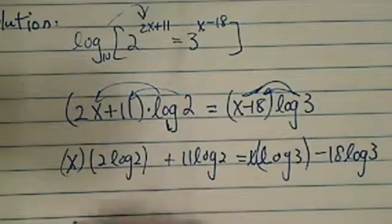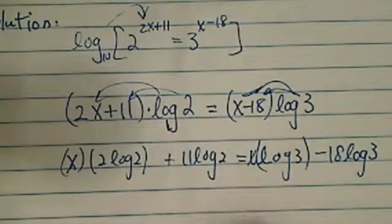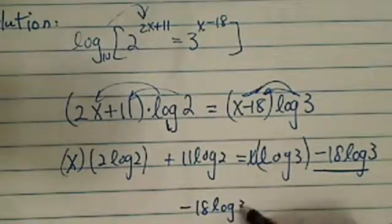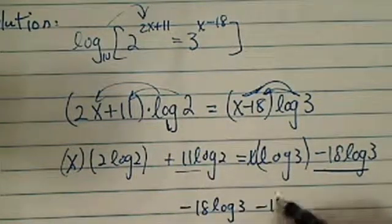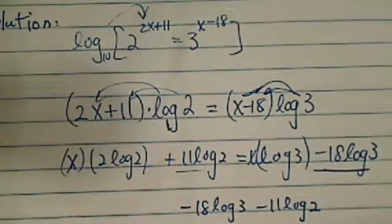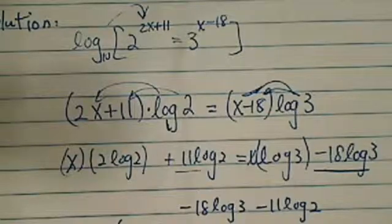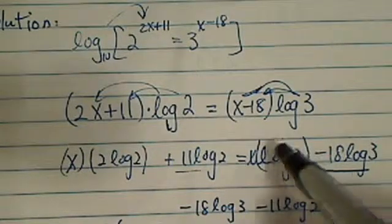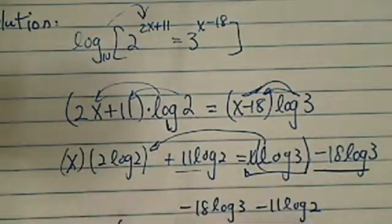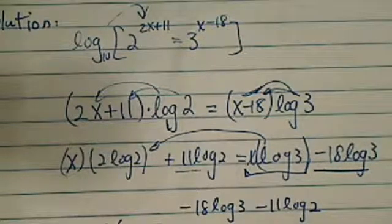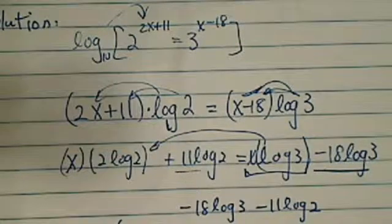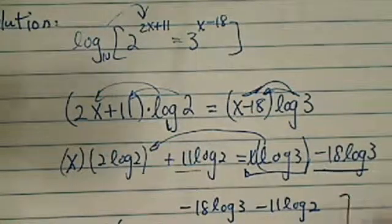Let's gather all the x over here and constant on that side. So constant on this side, I have this minus 18 log of 3, and then I'm going to minus 11 log of 2. I routed it down here, dividing because my x is going to be by itself. So I kind of skipped one step. So far, everything is in term of log.